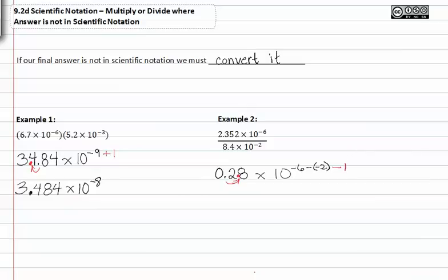This is similar or the same as dividing by a multiple of ten. And we get 2.8 times ten to the negative six plus two, which is negative four minus one, which is negative five.